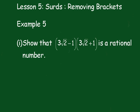Lesson 5, surds, removing brackets, example 5. Show that (3√2 - 1)(3√2 + 1) is a rational number.